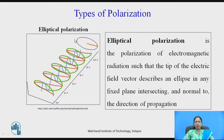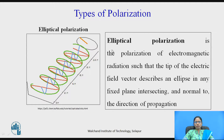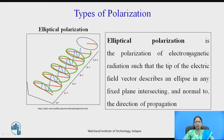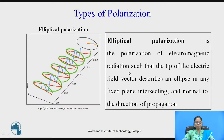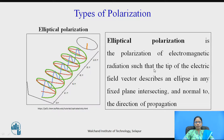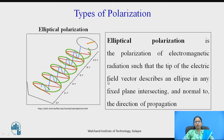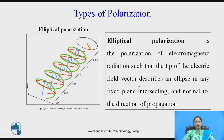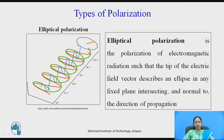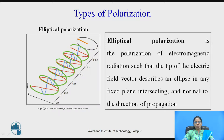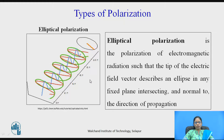In elliptical polarization, it is the polarization of the electromagnetic radiations such that the tip of the electric field vector describes an ellipse. This is the elliptical polarization.